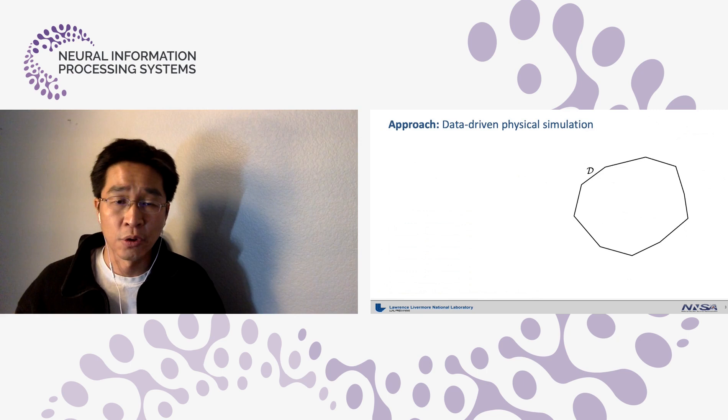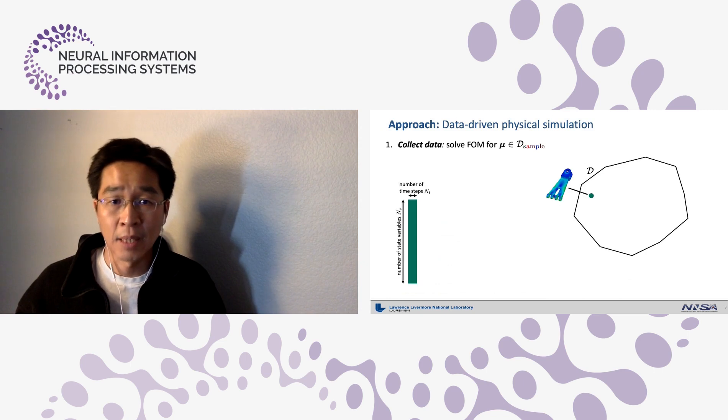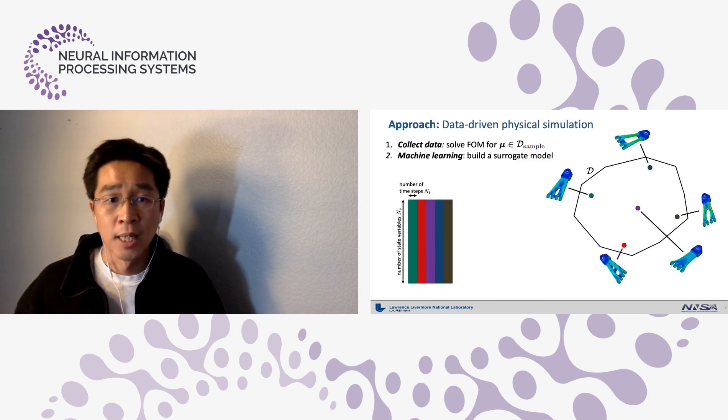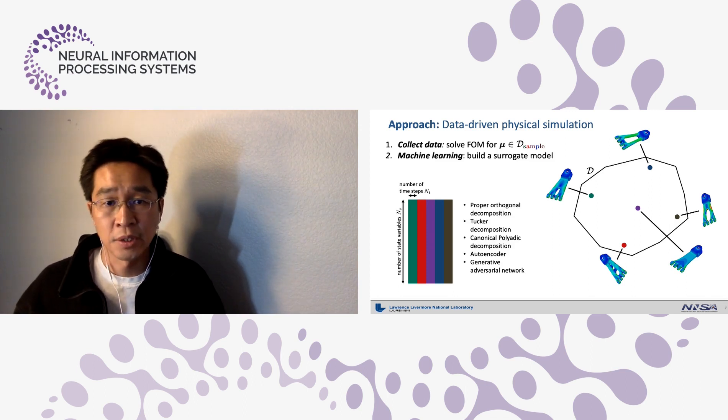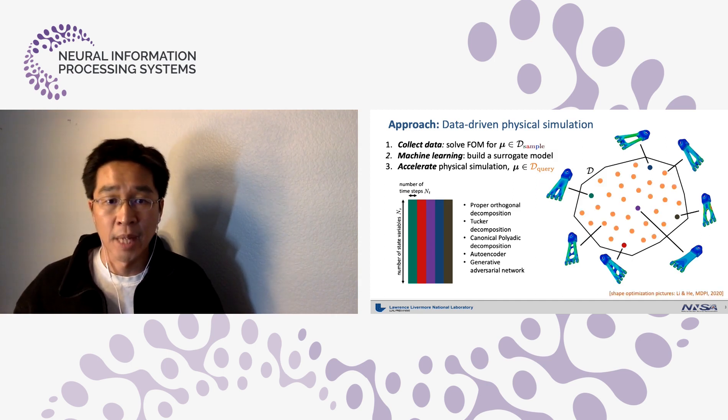Such a surrogate model can be built by first considering a parameter space D, where you collect data by solving full-order model for several sample points. Then you apply machine learning techniques to build a surrogate model. Various techniques are available as listed here. Then using the surrogate model, you can accelerate simulations with various query points here and there and many more.